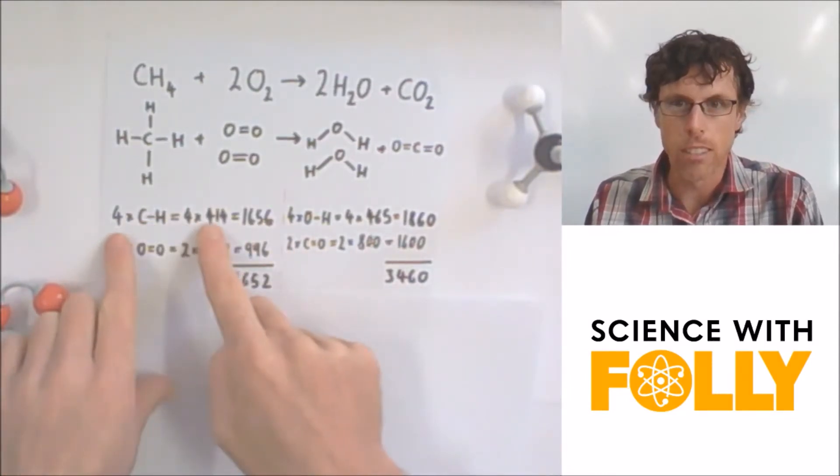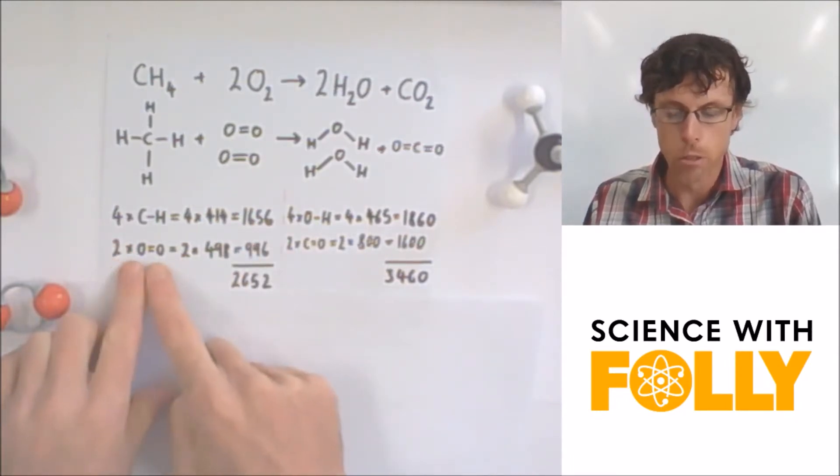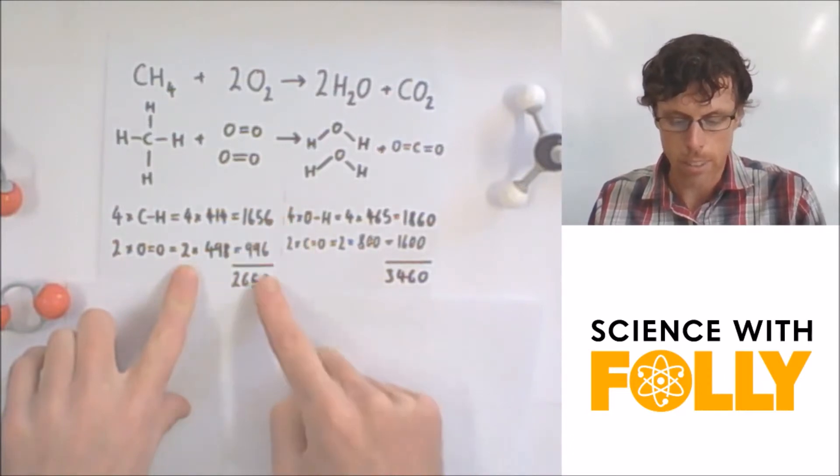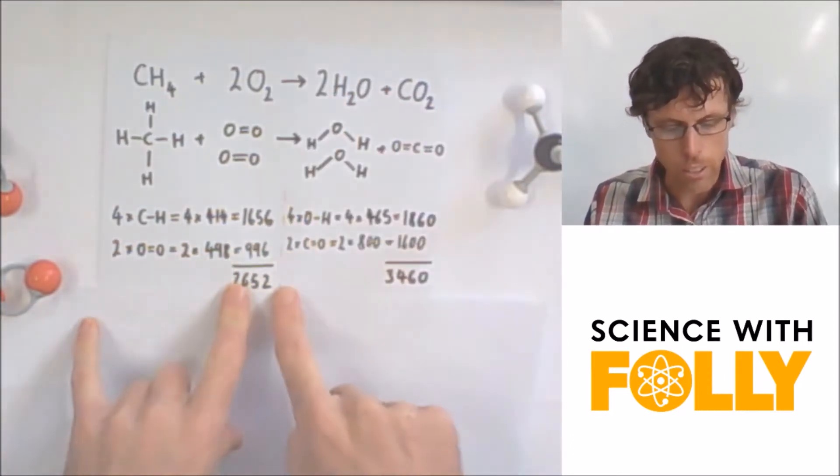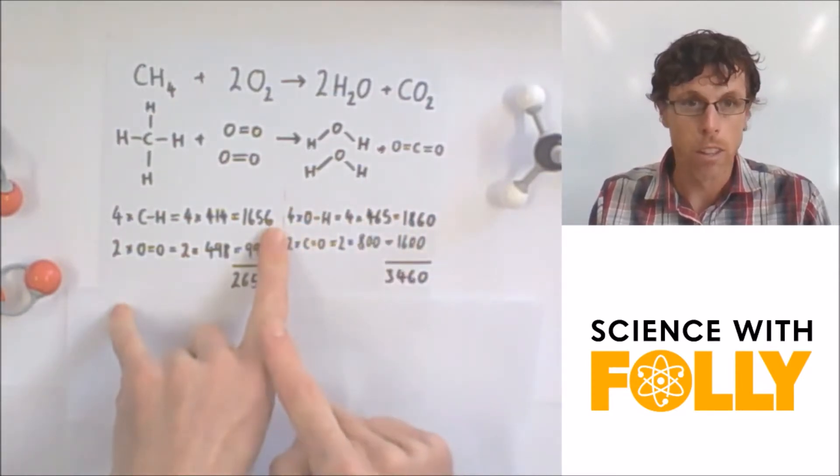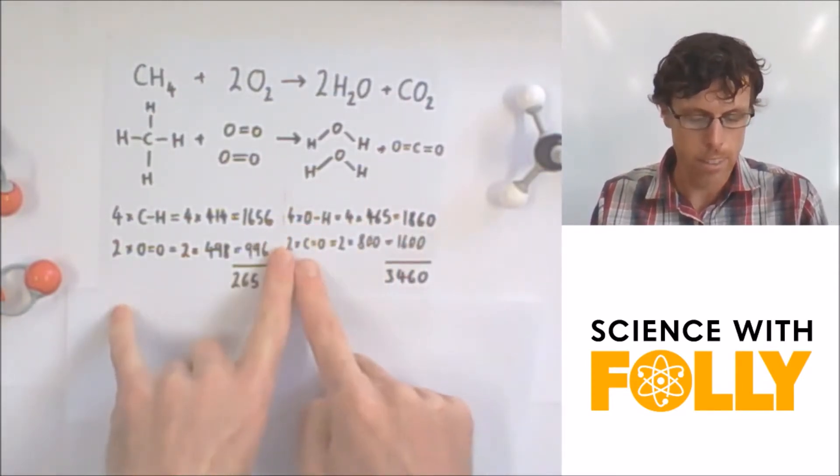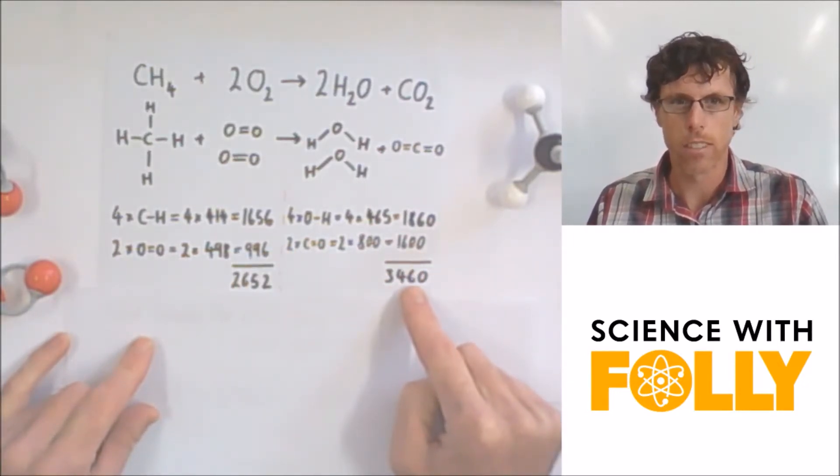We add up the four C to H's, four times 414 gives us 1656, two times O to O gives us two times 498, 996. Add them together, 2652. On this side of the equation, the bonds that are formed, four of those, total 1860, two of those, total 1600, and the total is 3460.